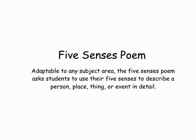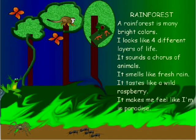Five senses poem — we start teaching five senses as young as pre-K, so this is something students from pre-K all the way through can do. This was another buddy project between kindergarten and fifth grade. 'Rainforest is in many bright colors. It looks like four different layers of life. It sounds like a chorus of animals. It smells like fresh rain. It tastes like a wild raspberry. It makes me feel like I'm in paradise.' The kindergartners relayed what they knew about the rainforest and the fifth graders helped them type, and together they drew the picture. That's a great learning experience — collaborating across grades really lets you know that older students understand what you've taught them, because when you can break it down and teach it to someone else, you know they get it.